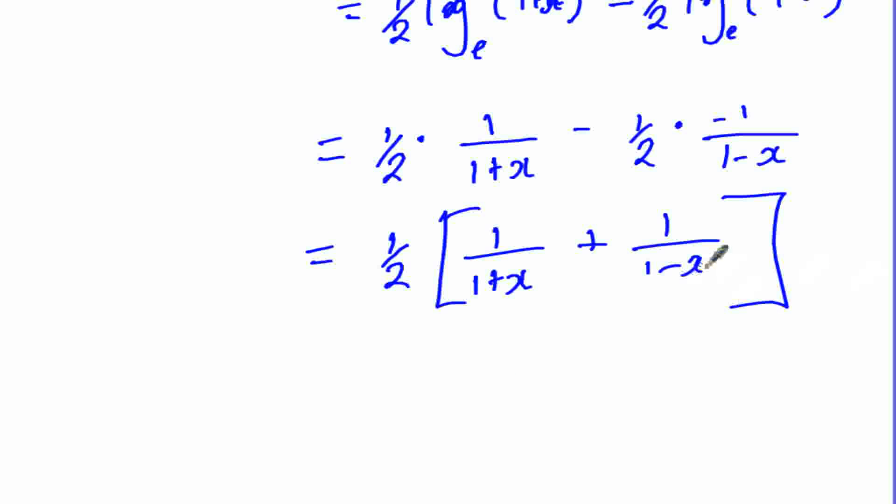So we are going to simplify now. This is one-half into, the denominator is (1+x)(1-x), so when you multiply this times that it will give us (1-x) and when you multiply this times that it will give us plus (1+x).